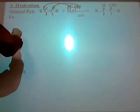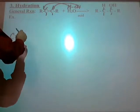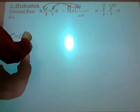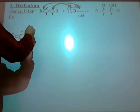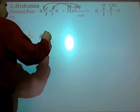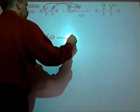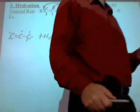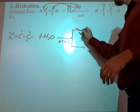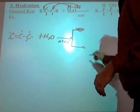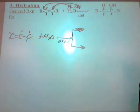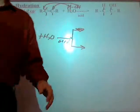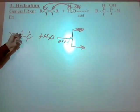What is the first example? Remember, you're going to have two possibilities over here. I take my alkene, I react it with water in the presence of an acid, and I get two possibilities. Where can that OH go? The OH can go either on this carbon, the first one, or the second one.